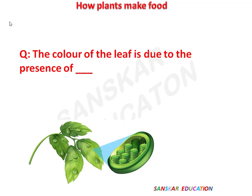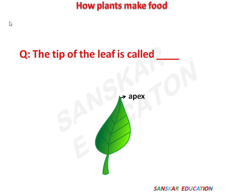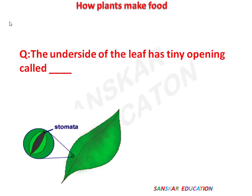The color of the leaf is due to the presence of — answer is: chlorophyll. The tip of the leaf is called — answer is: apex. The underside of the leaf has tiny openings called — answer is: stomata.